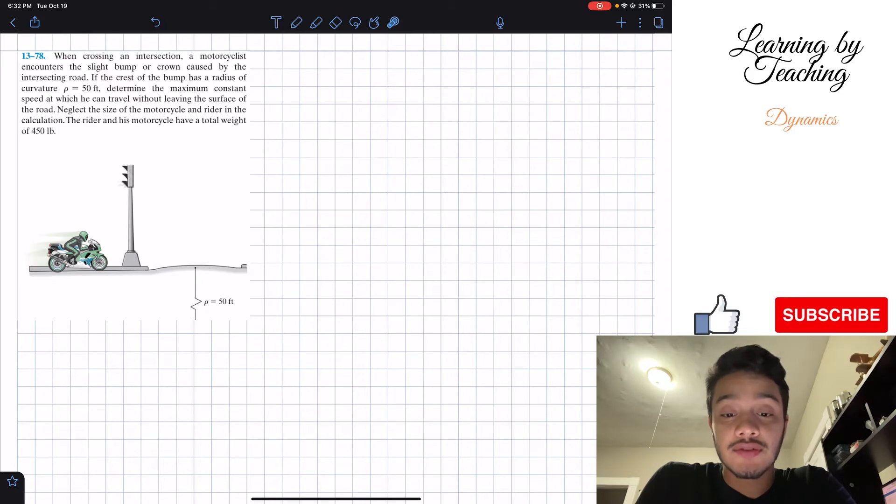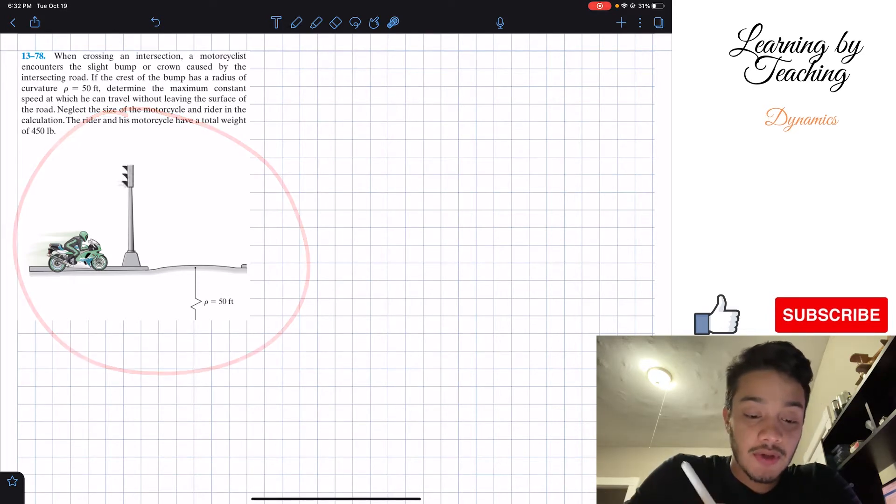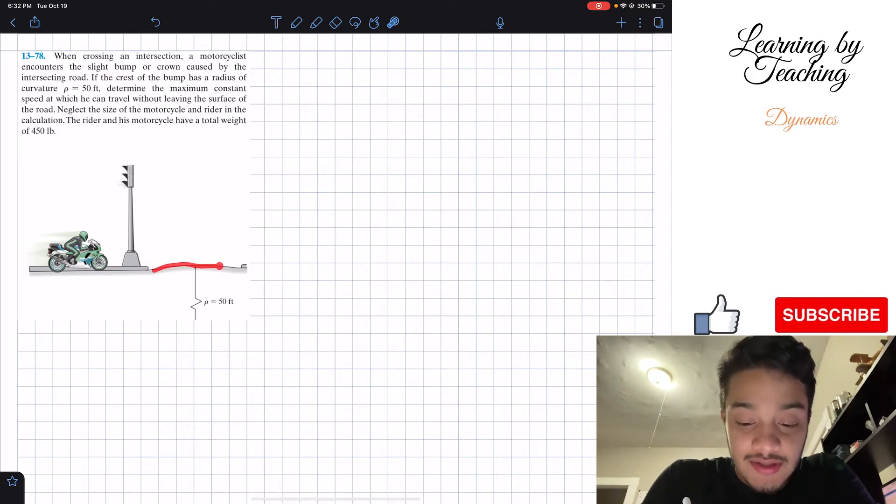The rider and his motorcycle have a total weight of 450 pounds. So what we can see in our picture is that we're given a motorcycle and he is about to cross this curvature or bump that has 50 feet as radius of curvature. What we need to calculate is the velocity, the minimum velocity at which he's going to pass without leaving the surface caused by this bump. As you guys know, what I like to do first is write out my givens. First, I have that ρ, my radius of curvature, is equal to 50 feet. Next, they're also giving us the weight of the motorcycle and the rider to be 450 pounds.